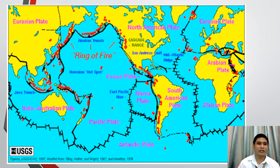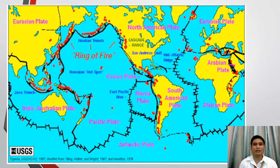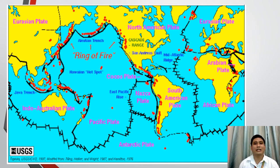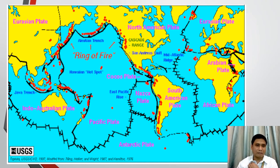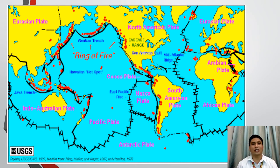So, the Earth's lithosphere, or the Earth's crust, is not whole all throughout. It's composed of huge masses of land that move as a single unit and interact with other plates. Because of these interactions, earthquakes, volcanic activities, and the creation of mountain belts are occurring.